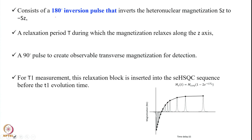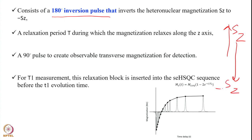In the T1 pulse sequence we apply a 180-degree inversion pulse that inverts the magnetization from +SZ to −SZ, and then this T period is allowed for the magnetization to come back to the Z direction. First we invert it, then allow the magnetization to do precessional motion and return to Z. This T period is varied, and we measure how the intensity changes as it comes back to equilibrium.